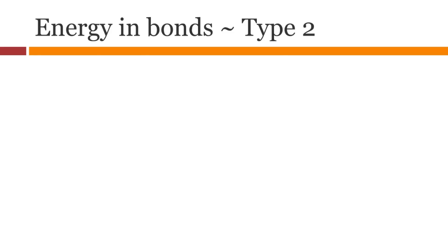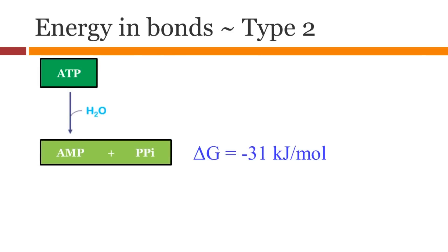The second type is going from ATP to AMP and pyrophosphates. This releases 31 kJ of energy. The phosphates then is broken down to release 33 kJ of energy. Thus, reactions that need more energy use this process.